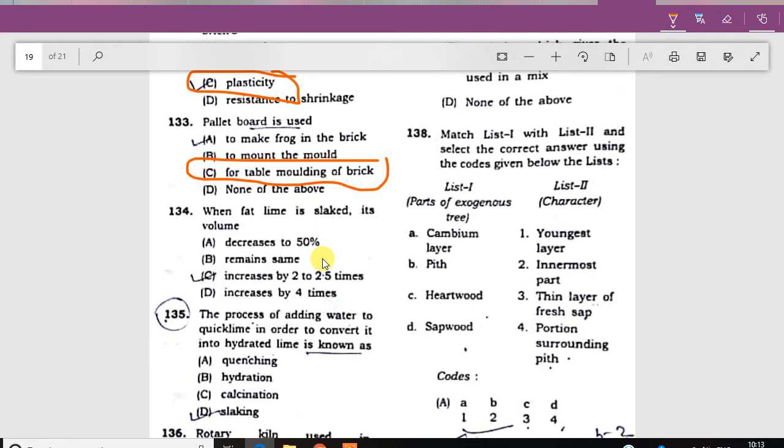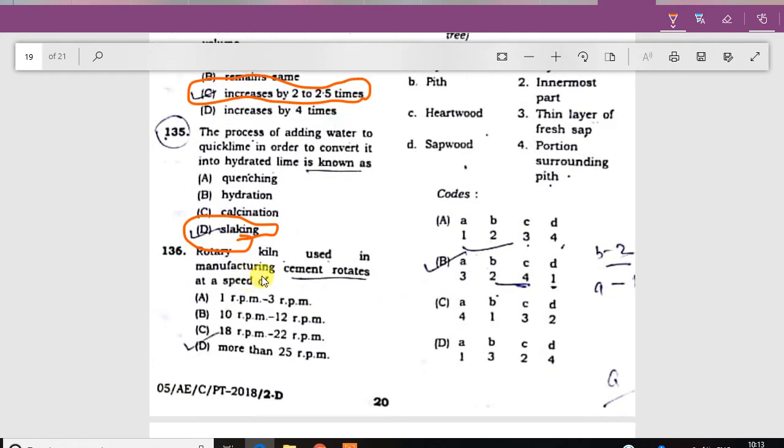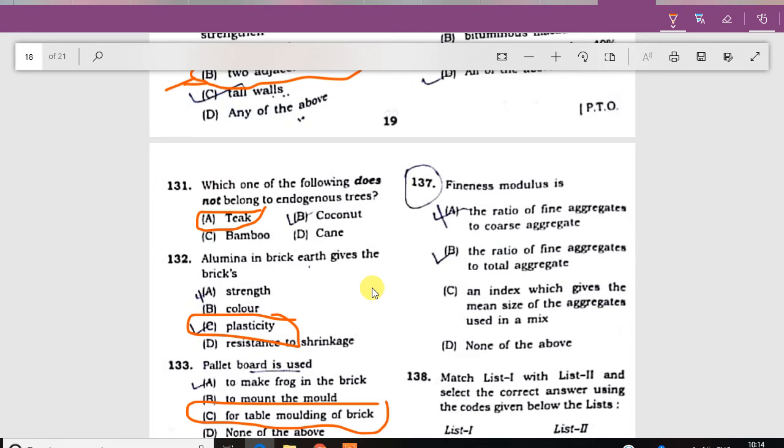When fat lime is slaked, its volume increases by 2 to 2.5 times. The process of adding water to quick lime to convert into hydrated lime is known as slaking. The rotary kiln used in manufacture of cement is rotated at a speed of 1 to 3 rpm.